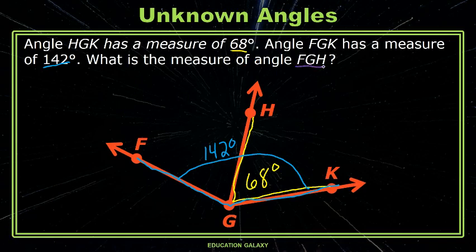Say FGH. So let's go find FGH. F to G. So this part right here, this is what we're looking for. That is our unknown. So let's make FGH known to the world.